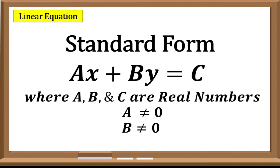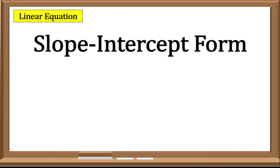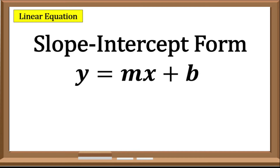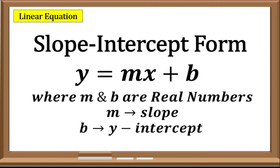The form of the slope-intercept is y equals Mx plus B, where M and B are real numbers. M here is represented by the slope, and B is represented by the y-intercept.